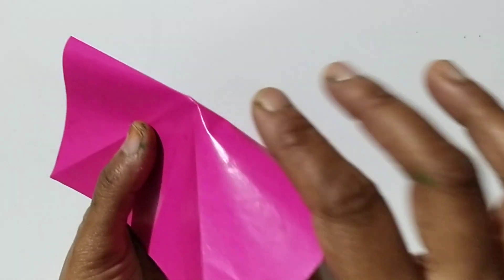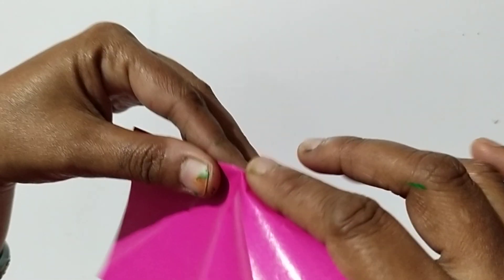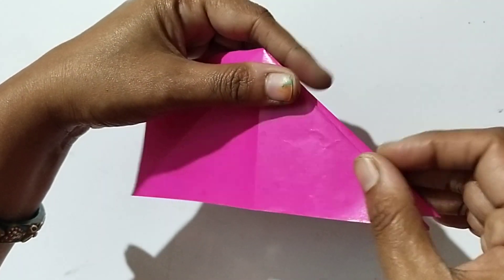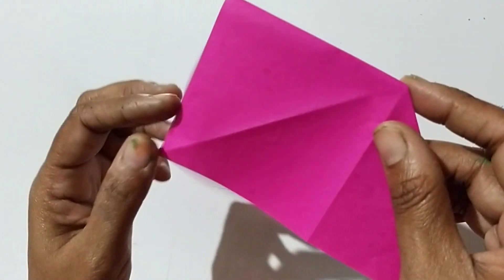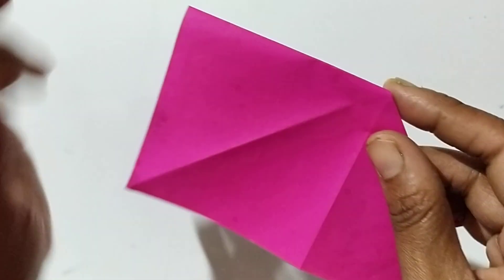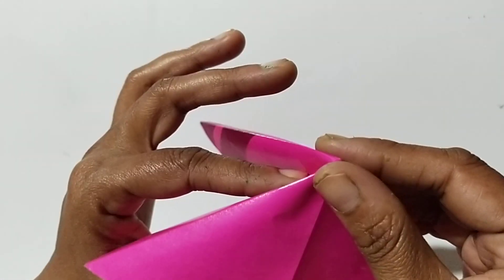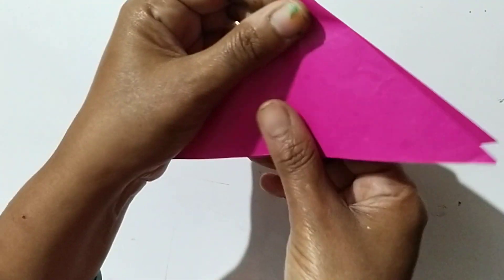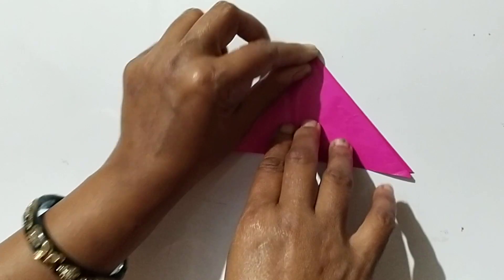Repeat the previous step with the left side also, like this. Then fold the left corner of the upper layer to the right side.